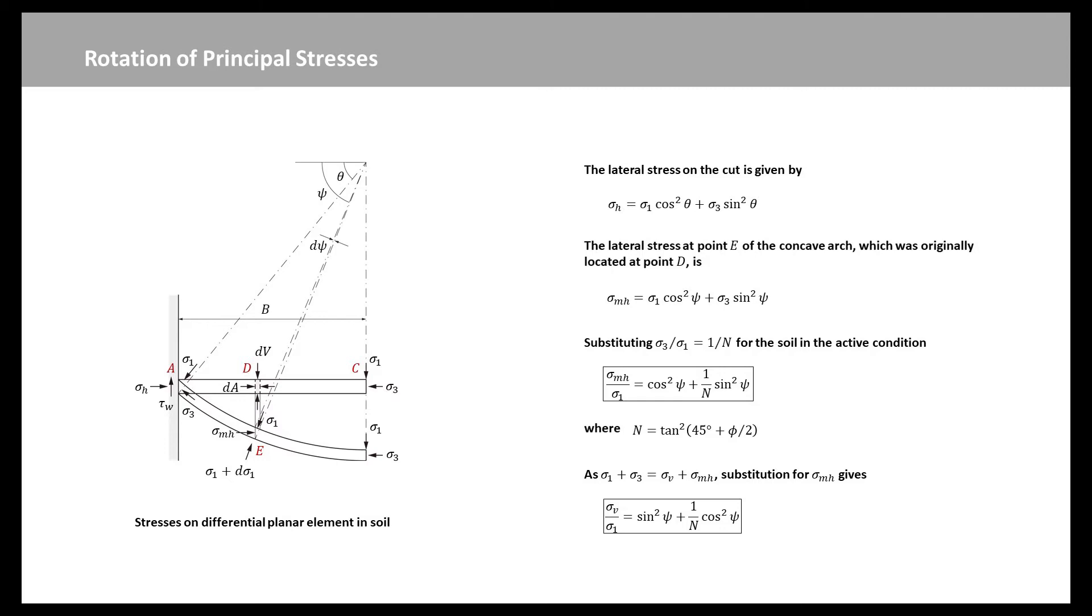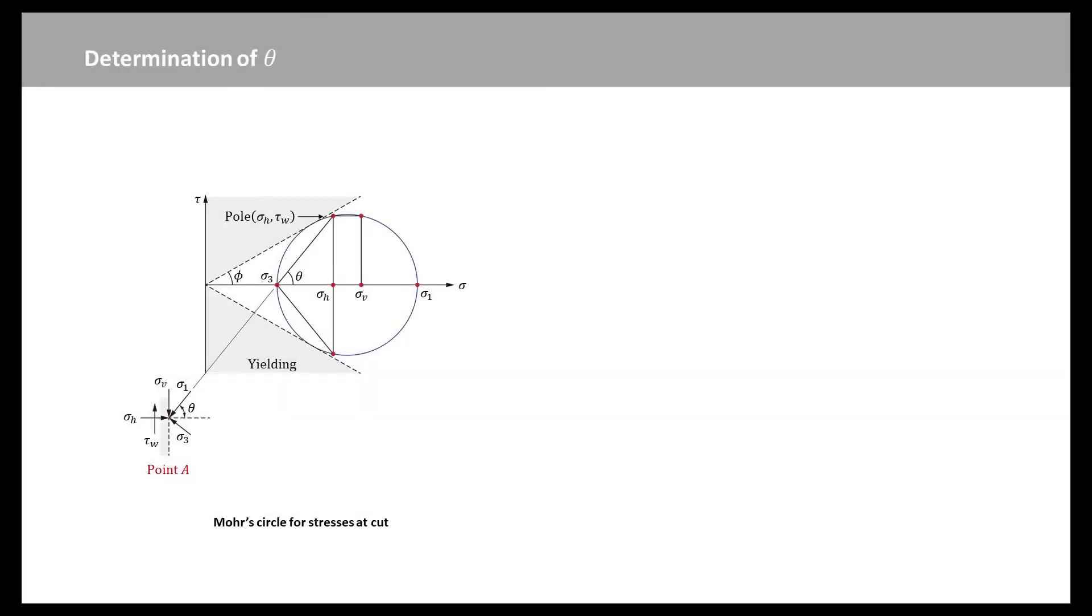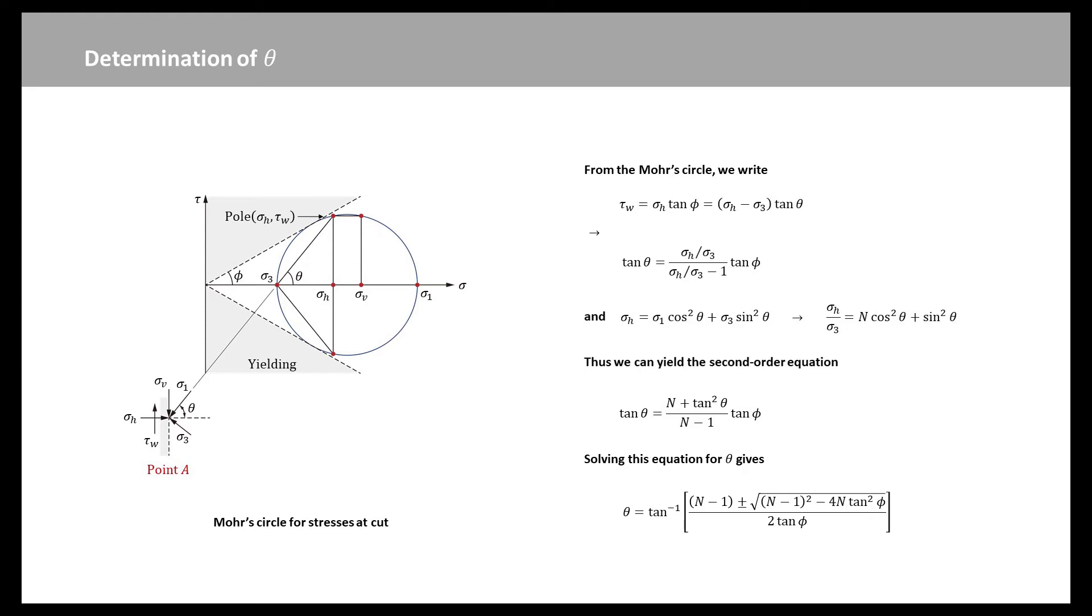The value of theta is a function of phi as we discuss next. The rotation angle theta of the principal stresses for the cut with cut friction angle of phi can be obtained using the Mohr circle. As shown in this figure, according to the sine rule, we can write this equation. Then rearranging this equation, we obtain the new expression. If we remember the previous sigma-h equation, then dividing this by sigma-3. So, we can combine the two equations and obtain the second-order equation. Solving this equation for theta gives this expression. When we have the two values of theta, the largest of the two values corresponds to the active action of the cut.